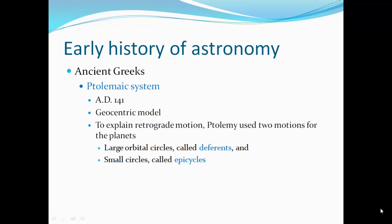The Ptolemaic System, AD 141, is a geocentric model. To explain the retrograde motion, Ptolemy used two motions for the planets: large orbital circles called deferent and small circles called epicycles. So you only get this retrograde motion when Earth is in the center of the universe, so you have to explain it.